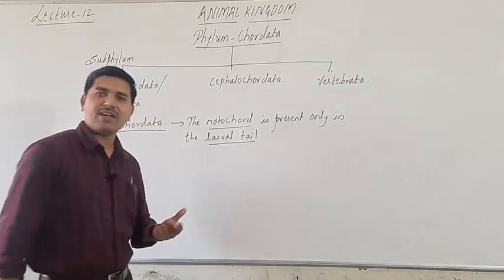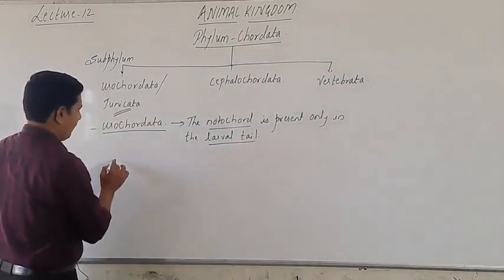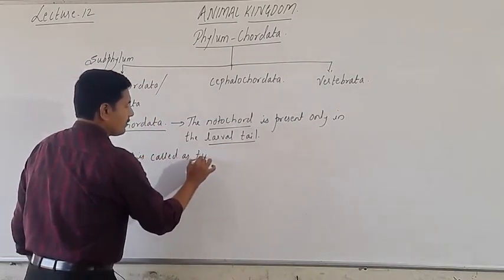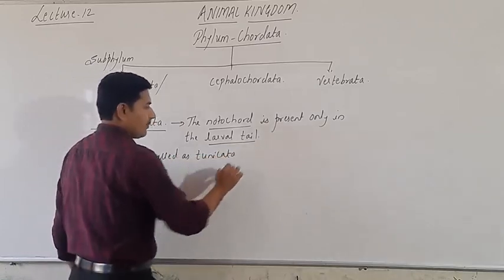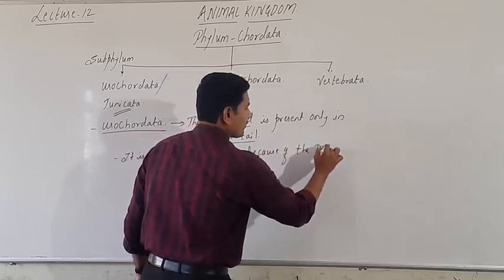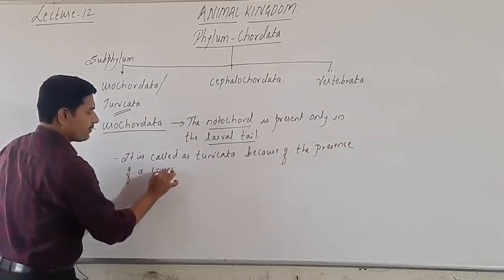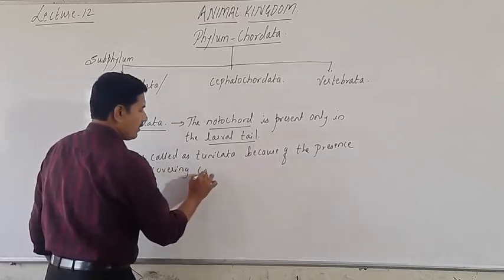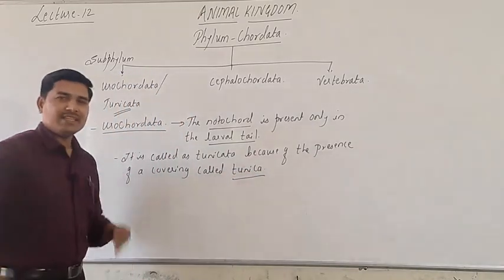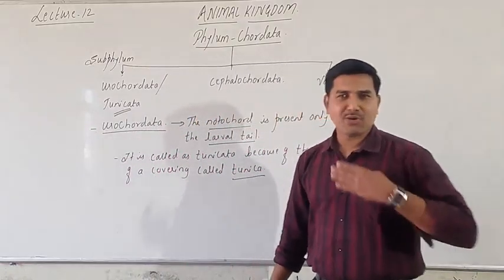They are attached to the rock surface or any hard substances in the oceans. It is called Tunicata because of the presence of a covering called tunica. Tunica is a cellulosic fiber layer present on the body of these animals.